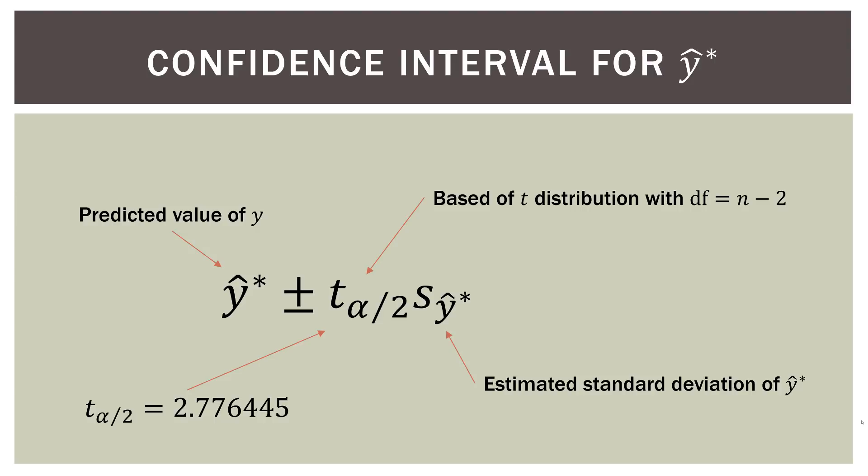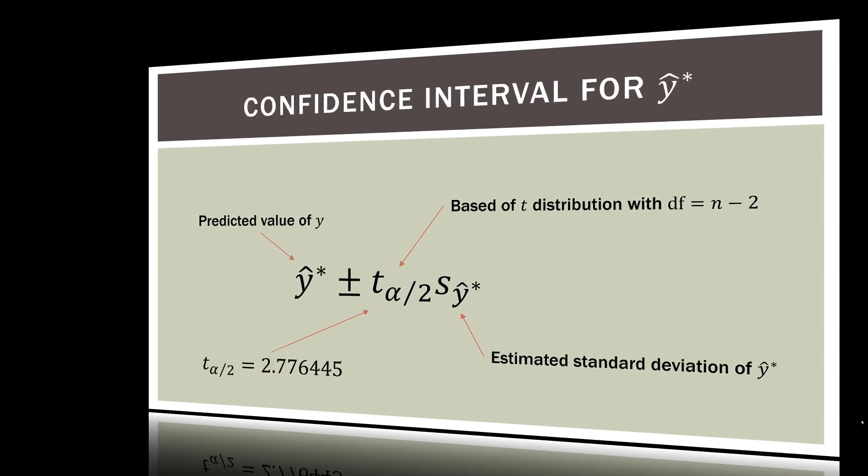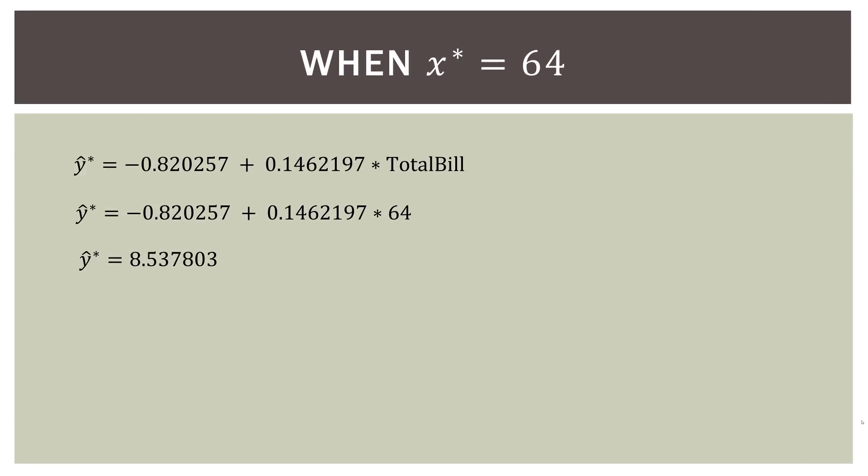And guess what? We already have the predicted value of y because that comes from our regression equation. So again, we already have two of the three. So to find that predicted value, again, we use our regression equation for the bill of $64. We need to substitute in and we get an estimated tip amount or tip amount of $8.53 or 54 cents. We've already done this.